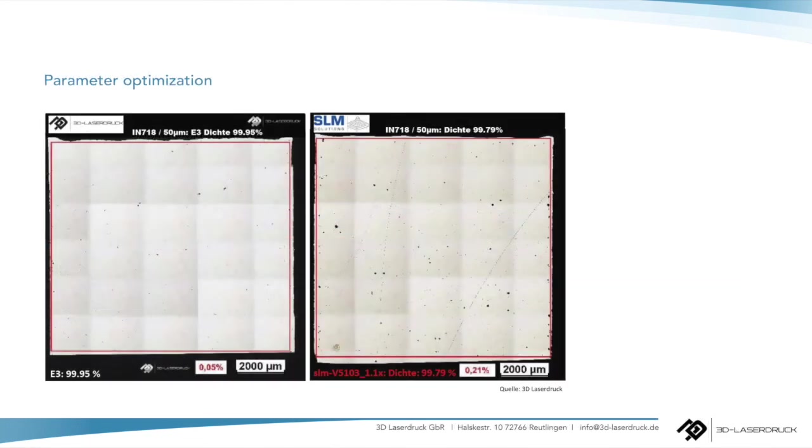Here's an example for a parameter optimization we did for Inconel. We get templates from SLM Solutions to make the materials printable. After the parameter went through the whole process we could improve the material density from 99.79% to 99.95% so you can see there's always room for improvement and we do this for every material so we are sure that we reach the highest possible quality we could get.